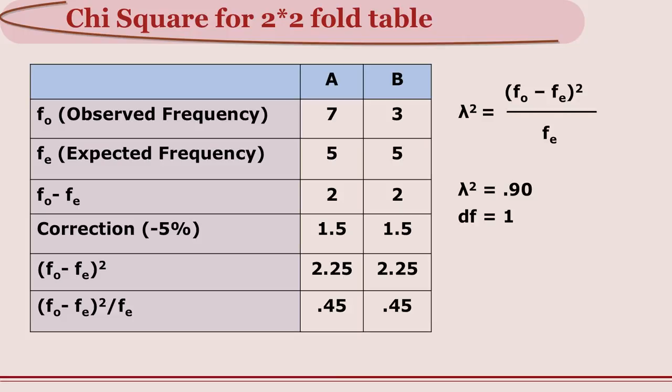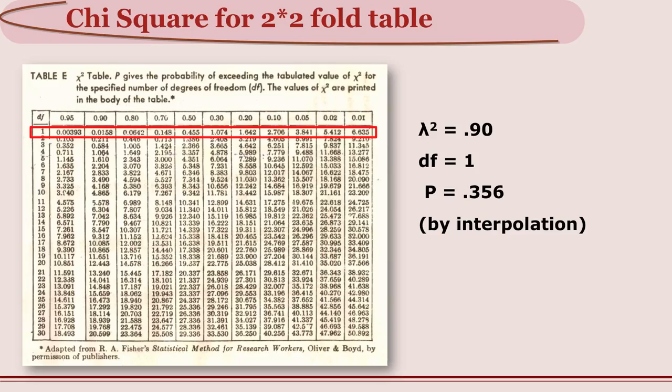We want to find out whether the chi square value of 0.9 is significant. With confidence levels 0.05 and 0.01, we refer to Table E. Degrees of freedom is 1. Our value of 0.9 falls between probability 0.3 and 0.5 — interpolating gives approximately 0.356. Since we need at least 0.05 and are getting 35.6% chance, we cannot reject the null hypothesis, so we retain it.